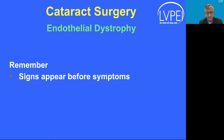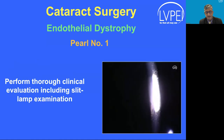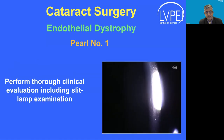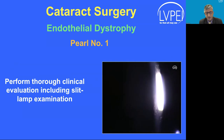Signs of Fuchs' endothelial dystrophy appear before symptoms. Therefore, most clinicians attribute vision reduction primarily to cataract and fail to identify the condition, leading to complications. It is very important that we perform a thorough clinical examination including a slit-beam evaluation of corneal endothelium in every cataract patient.